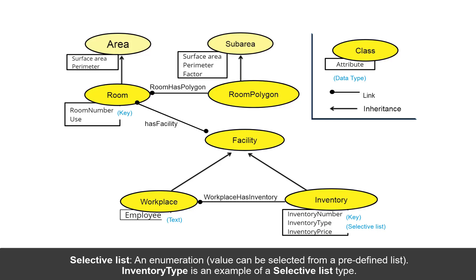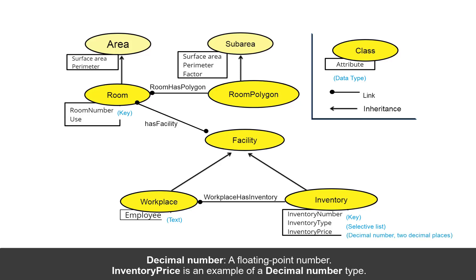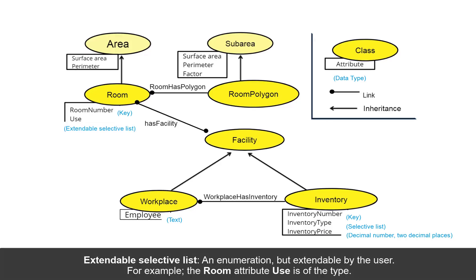Selective list: an enumeration where the value can be selected from a predefined list. Inventory type is an example of a selective list type. Decimal number: a floating point number. Inventory price is an example of a decimal number type. Extendable selective list: an enumeration, but extendable by the user. For example, the room attribute use is of this type.